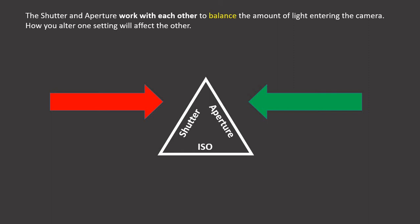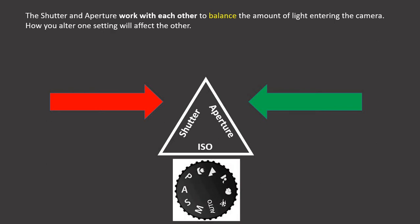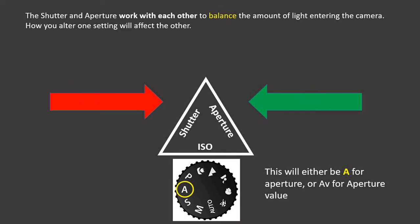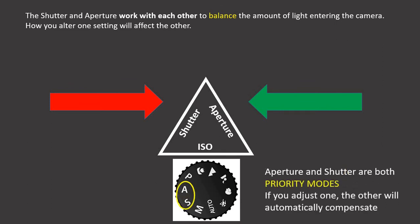The shutter and aperture work with each other to balance the amount of light entering — the camera wants to get the right amount of light. It will prioritise one over the other to get the right balance, and how you affect one affects the other. You can access these through the buttons on top of your camera. If you want the shutter you choose S — on some cameras that would be TV for time value. For aperture you use A, or it might be AV for aperture value. Together they work in what's called priority modes, meaning if you're in control of the shutter the camera looks after the aperture, and vice versa, so you only have to think of one thing.